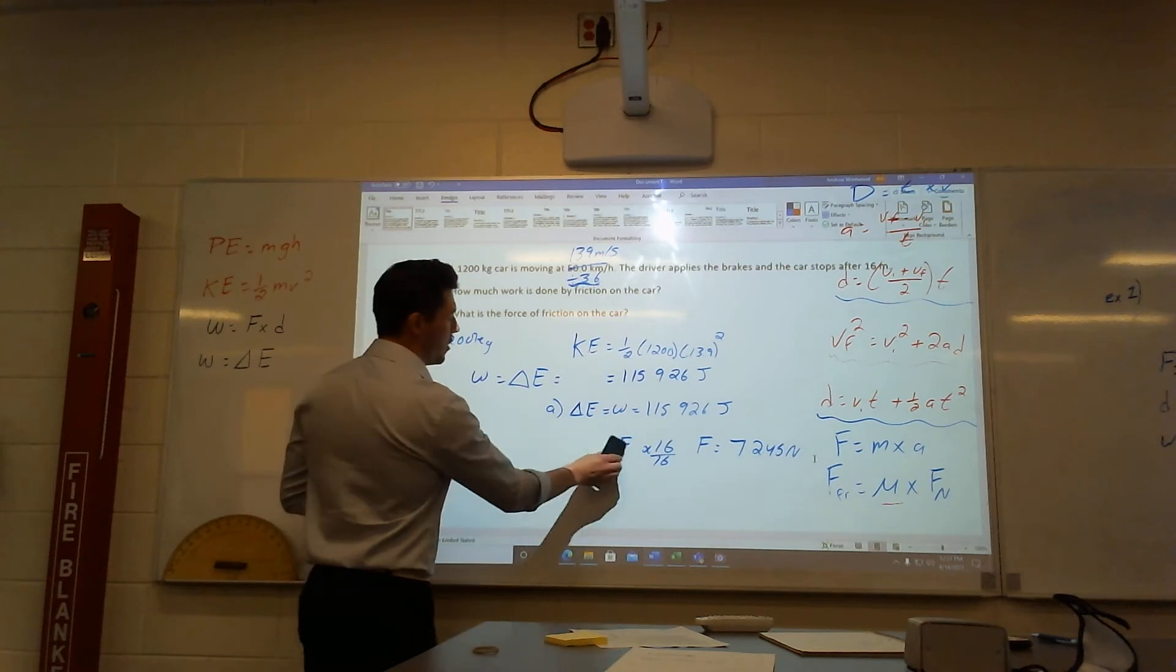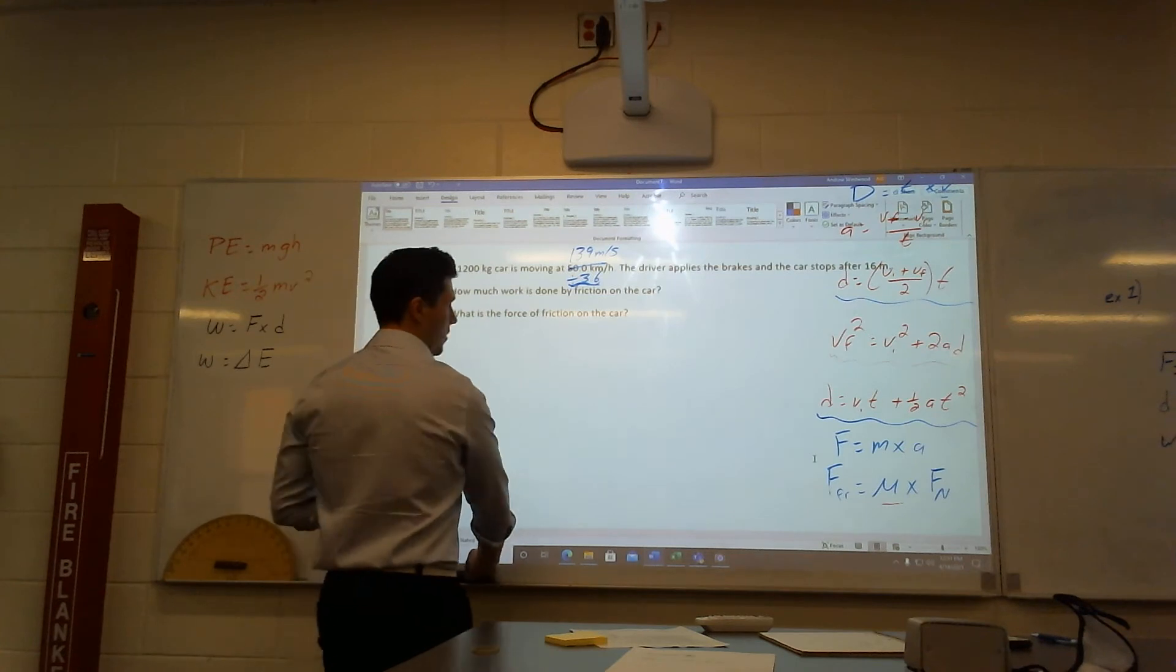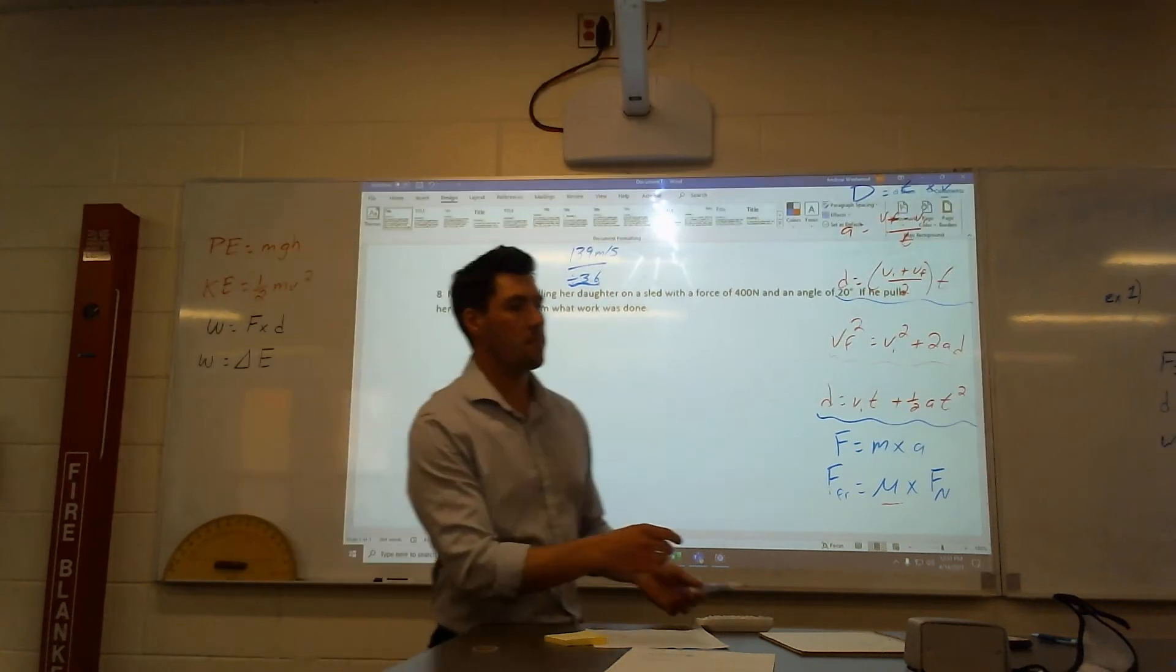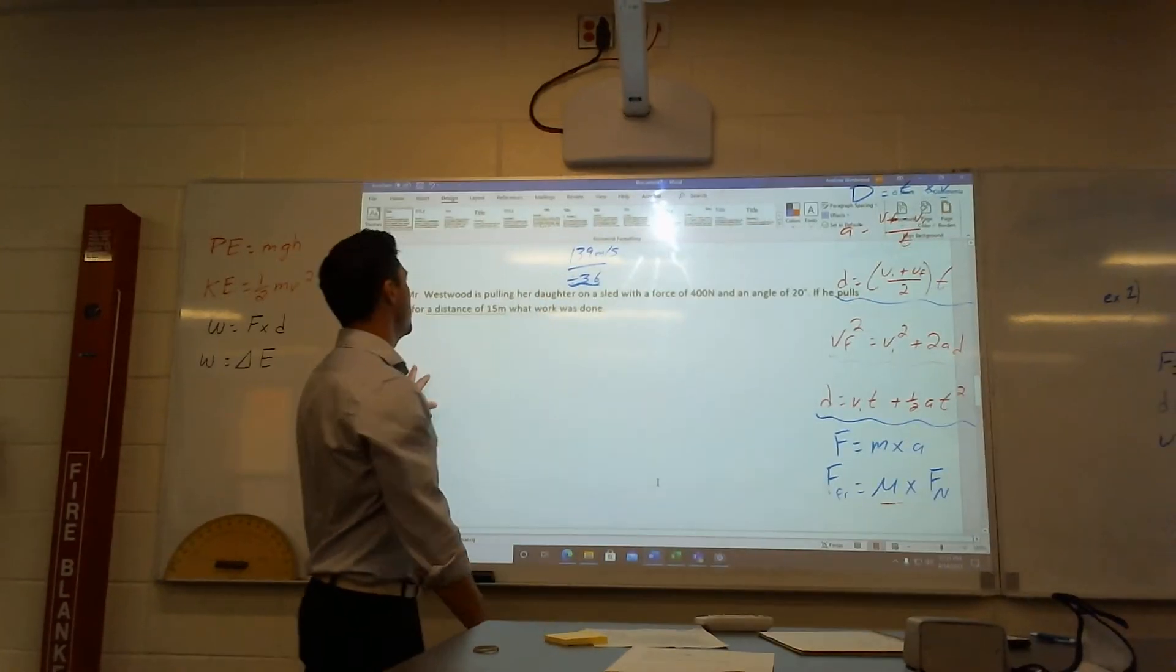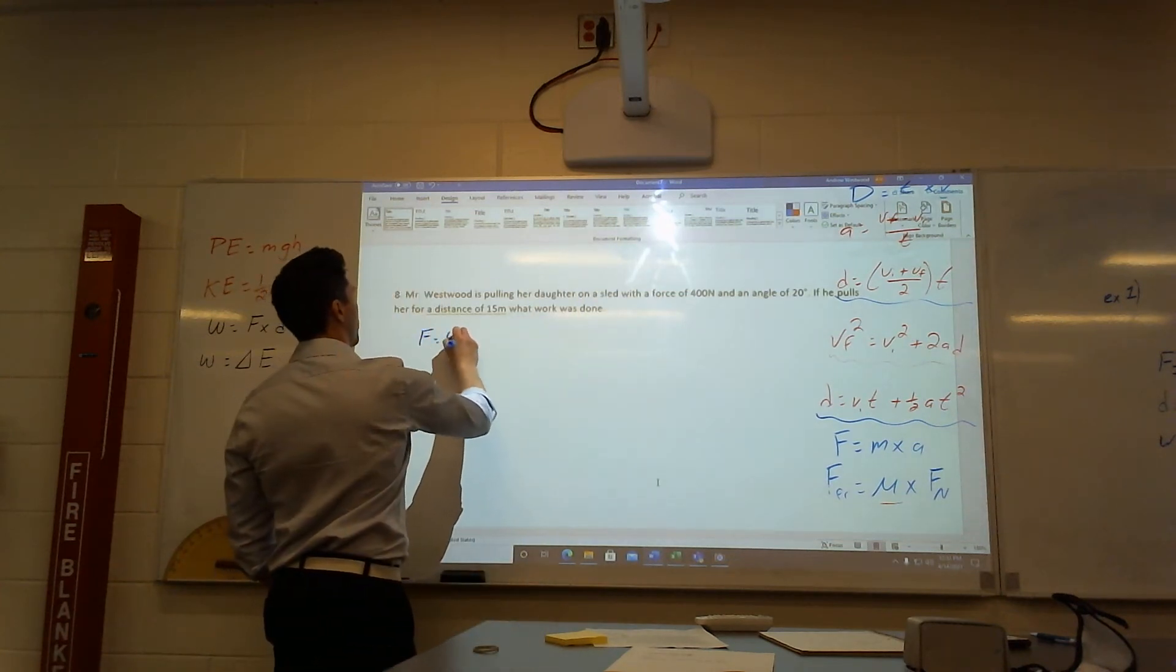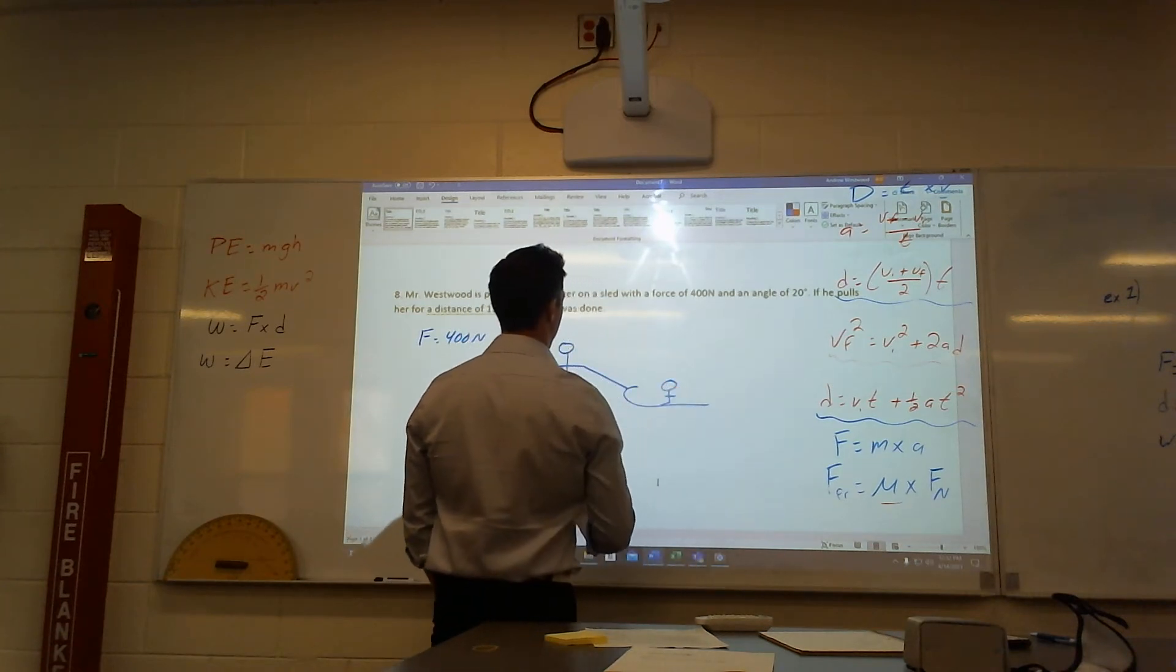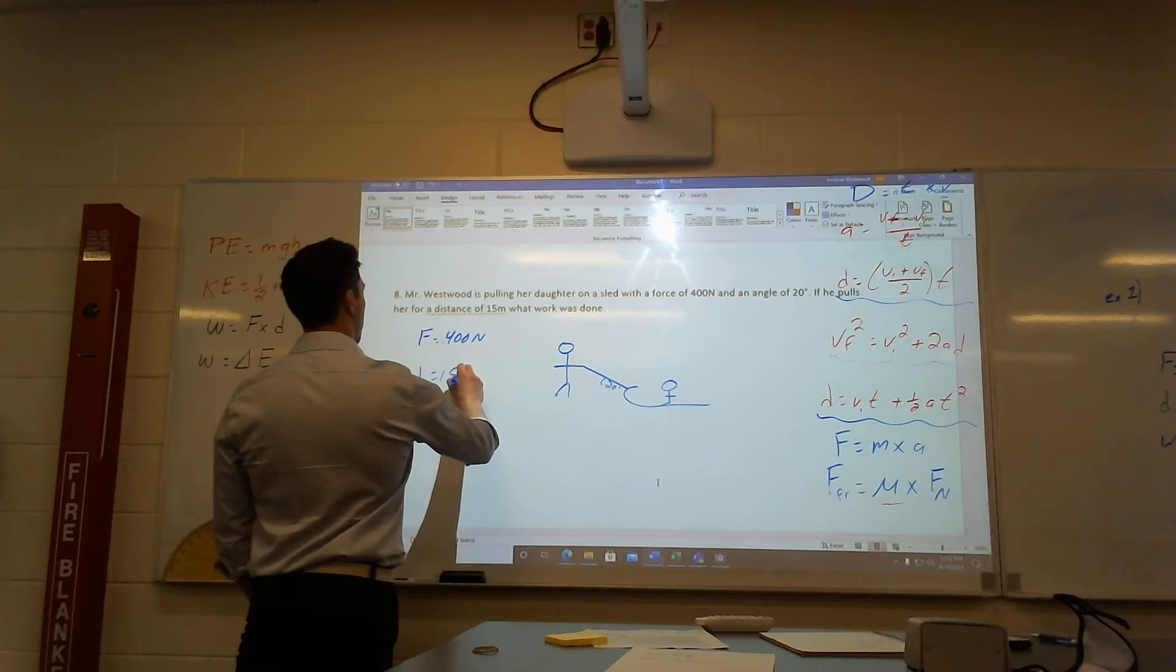The next two questions, if you want to write them down and try them out, you can absolutely do that. If you just want to watch me go through it as well, we can. Here's our next two questions. Question, I call it question 8, because your worksheet stops at question 6, so I just made two new questions here. If you want to actually stop and try this out, I'll talk about it, and then you can try it out before if you'd like as well. It says Mr. Westwood is pulling his daughter on a sled with a force of 400 newtons at an angle of 20 degrees.